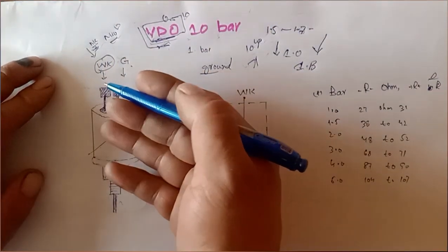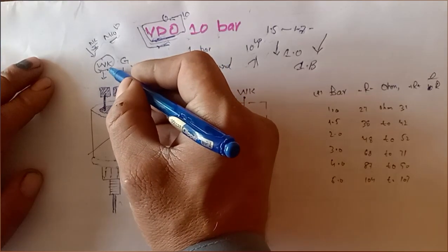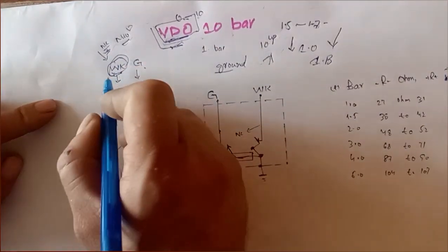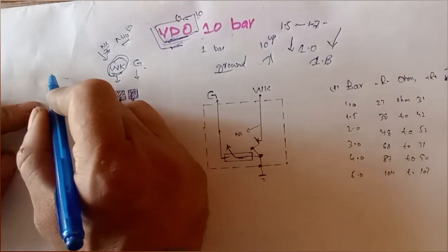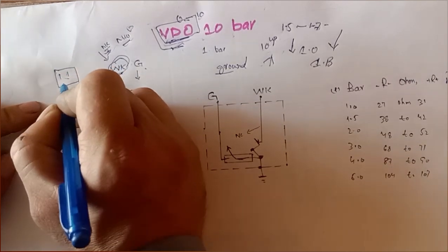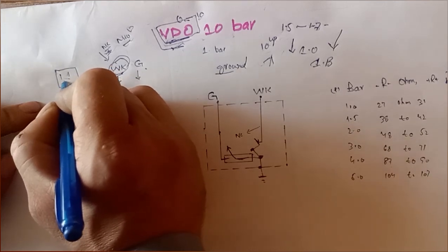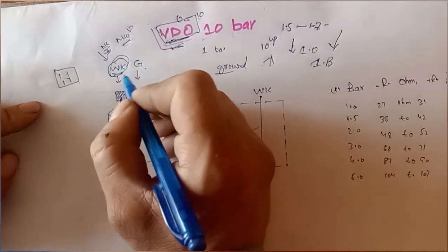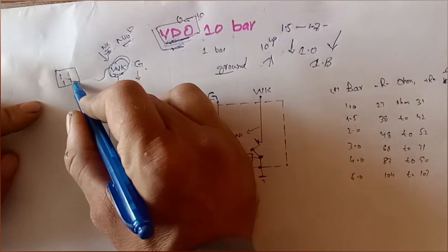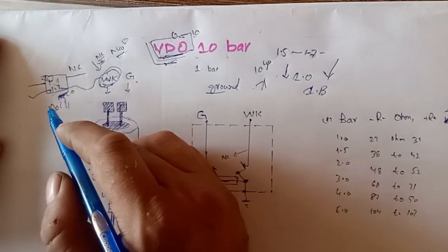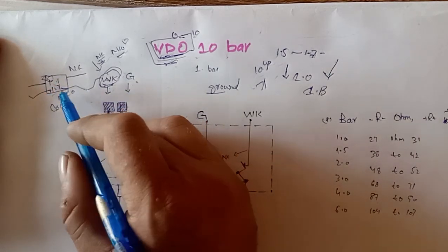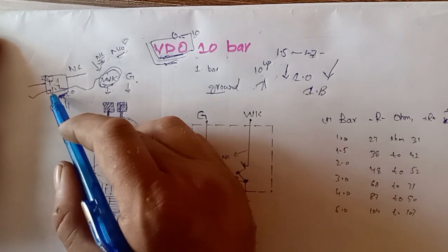This WK connection is your safety switch. For example, if you are using this safety switch, take one relay. You take one wire from WK — for example, relay two points are your coil points.